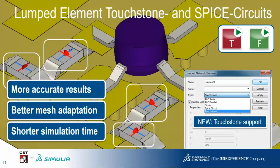A feature that we had last year for the frequency domain and time domain solvers — being able to use SPICE circuits for lumped element definitions in 3D models — is now extended to include Touchstone circuits as well. This means we can include directly in the 3D simulation a circuit component, either SPICE or Touchstone, without having to run a 3D circuit co-simulation. The main advantage is that you get a more accurate circuit representation for your lumped elements without leaving the 3D modeling environment, no circuit topology information is lost, and you get more accurate 3D simulation results since real element behavior is directly simulated. Mesh adaptation also benefits, as with more accurate results we can refine the mesh more accurately around the lumped elements.